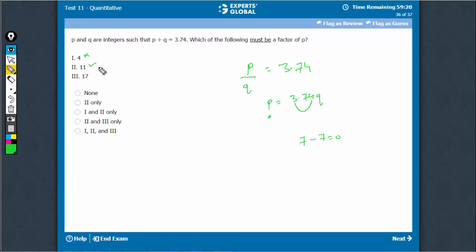And 3.74 is again a multiple of 17. 17 times 2, 17 times 0.22 would lead to 3.74, or 17 times 22 will lead to 374.